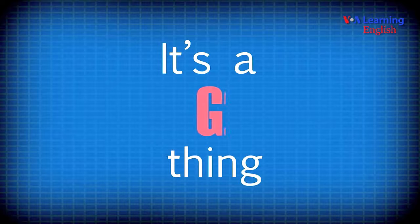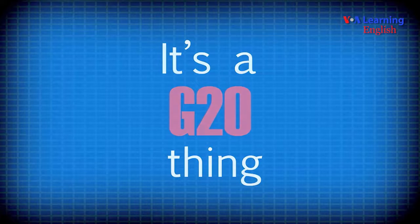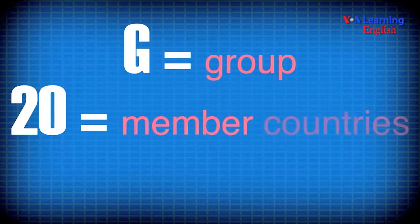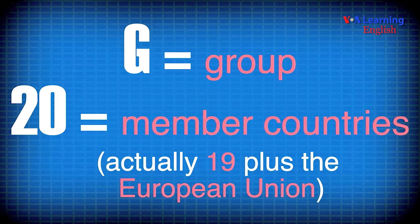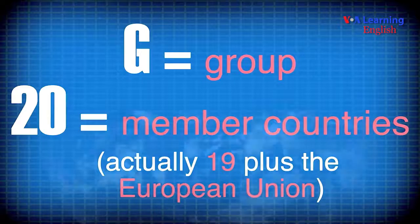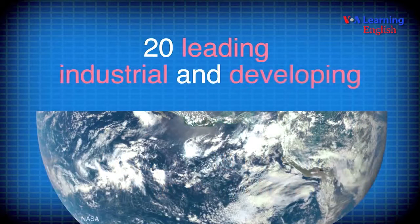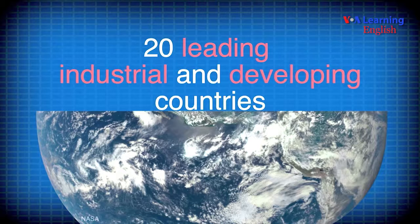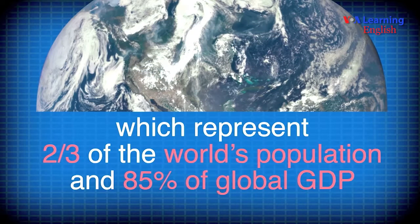It's a G20 thing. G equals group, 20 equals member countries — actually, 19 plus the European Union. 20 leading industrial and developing countries, which represent two-thirds of the world's population and 85% of global GDP.